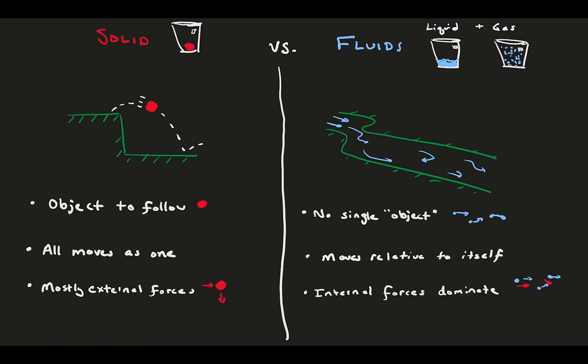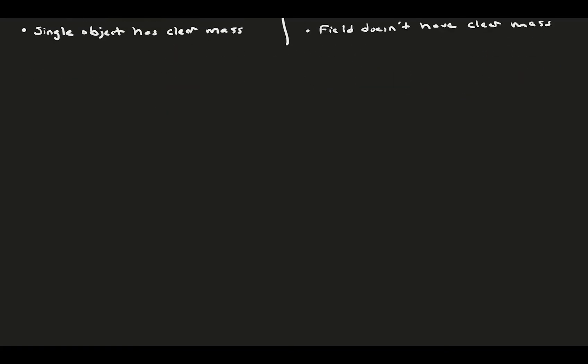So, for fluid mechanics, we have more forces to worry about. And finally, because we have a single solid object when we consider solid mechanics, we have a clear mass that's defined. This would be the mass of the ball. However, fluids don't have a single object, thus defining the mass at any given point is a bit difficult. As we will see later, this means considering things like density instead.